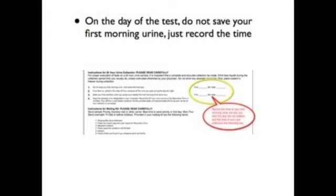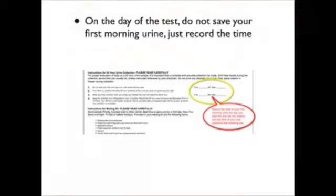On the day of testing, do not save your first morning urine — just record the time you went on your lab requisition form. Then collect, in the brown bottle, all the urine that you pass during the day and night. Your final collection is made when you empty your bladder the following morning. Again, denote the time and date of your final collection on your lab requisition form.